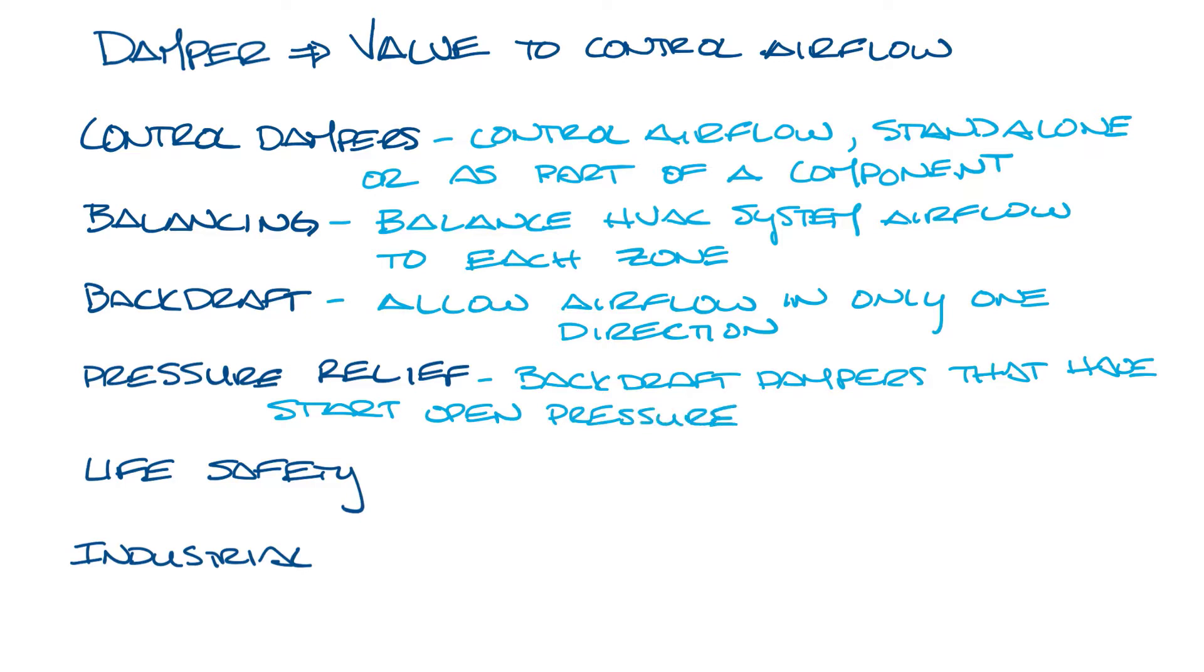Life safety dampers are put in openings in walls, ceilings, and floors to prevent the spread of smoke and fire. They operate automatically when they detect smoke or fire. In the case of smoke, they are designed to close quickly to restrict the spread of smoke in an HVAC system, but less often they can be designed to open to control the movement of smoke within a building.